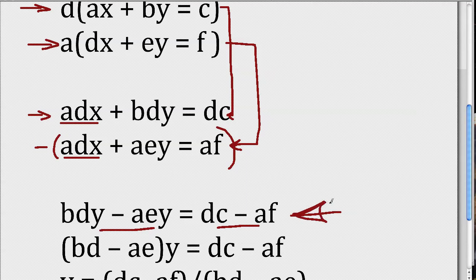Okay, so now we're almost done, because the first thing I'm going to do here is notice I have BDY minus AEY. I'm going to factor Y out and write this expression as, in parentheses, BD minus AE all times Y. And then that's equal to DC minus AF.